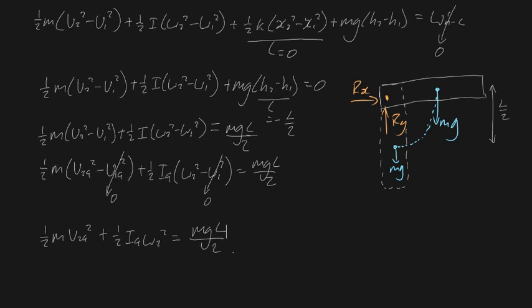But we've got two unknowns in one equation, so we need a way to put v2g in terms of ω2. And the easiest way to do this, in fact the only way to do this, is using circular motion. So notice the path that the center of mass undergoes will be circular.